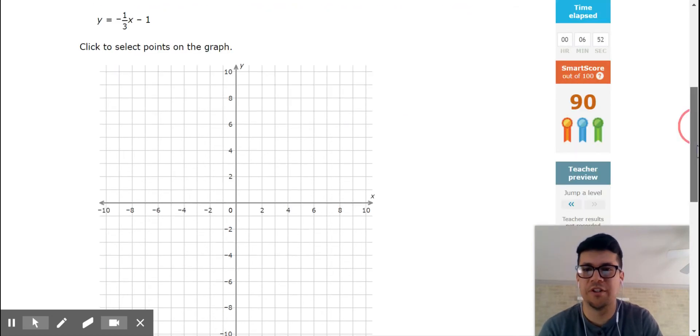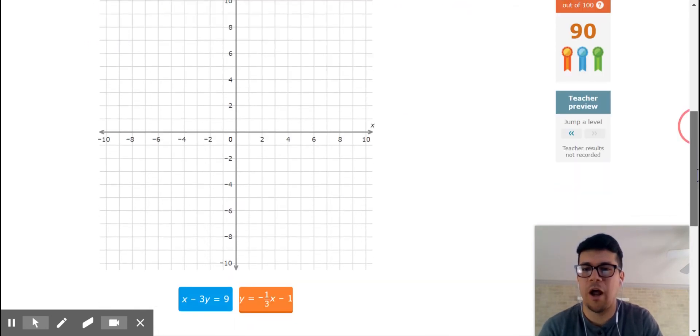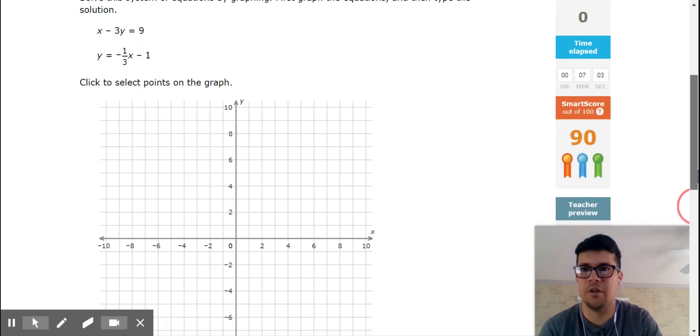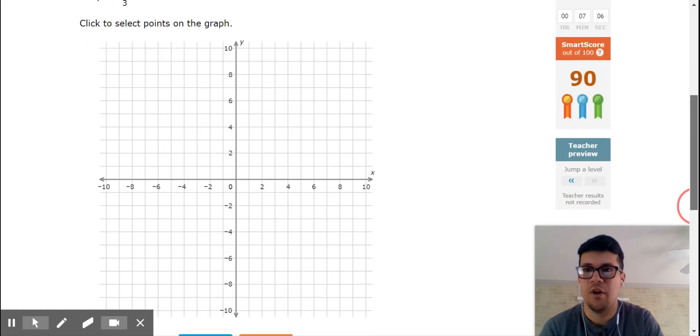The way that we do these problems is very simple. We need to basically graph both of these, which it lets me graph them. And after that, I need to basically find their intersection.